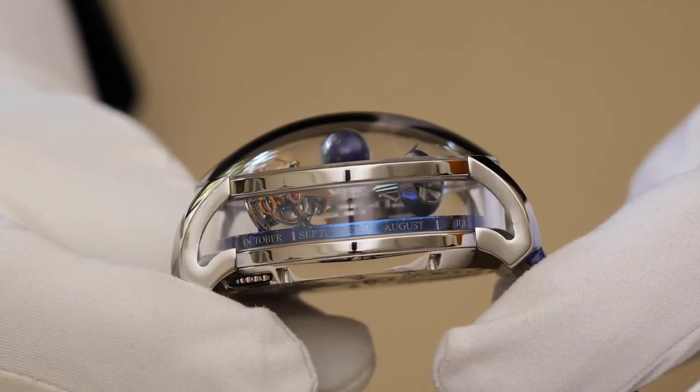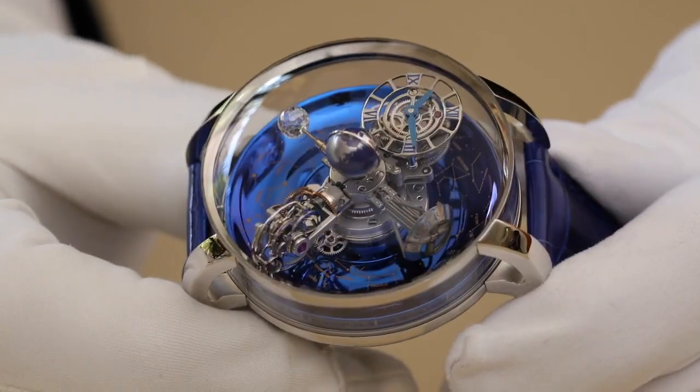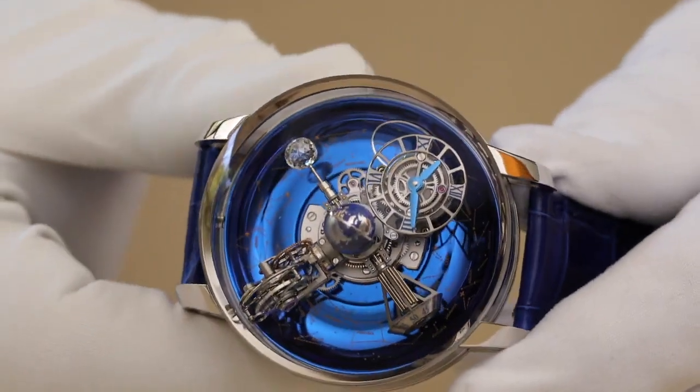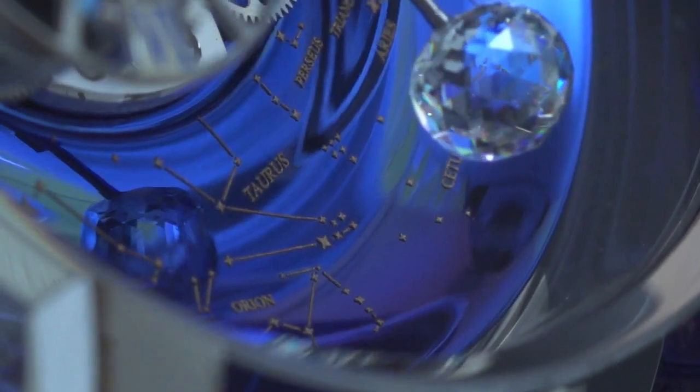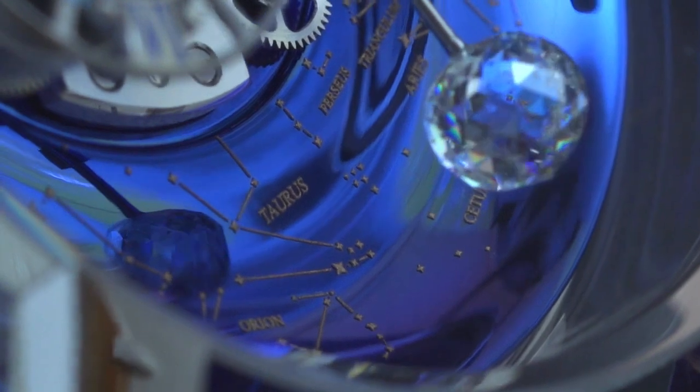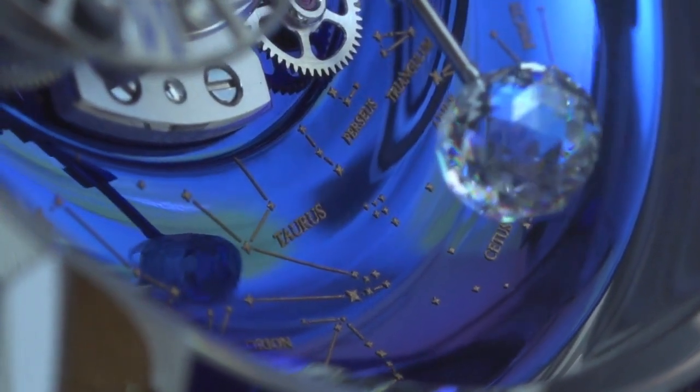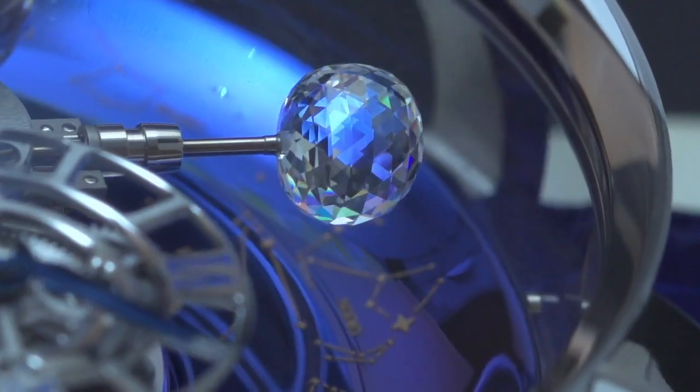The blue titanium base is actually a celestial dial that makes one full rotation in a sidereal year, and the sidereal month is displayed on the side of the dial, visible through the sapphire crystal side case.